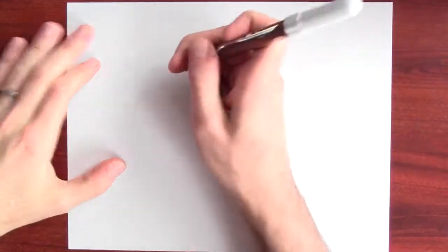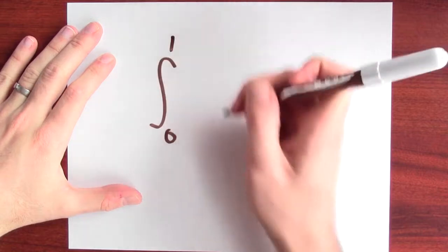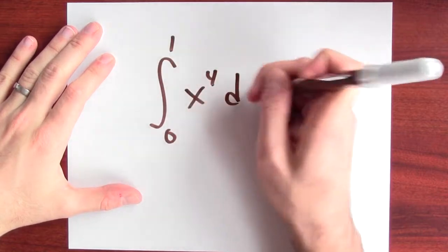Let's find the area under the graph of a polynomial. So, let's integrate from 0 to 1 the function x to the 4th dx.